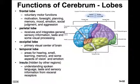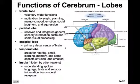The central sulcus divides the frontal lobe from the parietal lobe. The parietal lobe forms the uppermost portion of the brain and underlies the parietal bone. It begins at the central sulcus and extends caudally to the parietal-occipital sulcus. It's involved in integrating general sensory information, taste, and some visual processing.